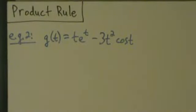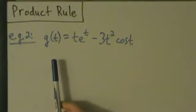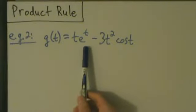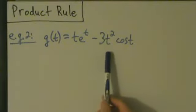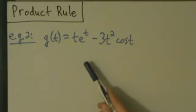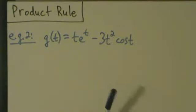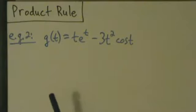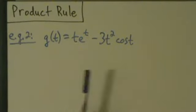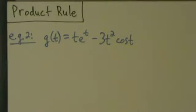Here's example two with a product rule. We have g of t equals t times e to the t minus 3t squared times cosine of t. It looks like kind of a mess, but remember, the sum and difference rules tell us that we can just differentiate term by term. So we can just focus on one term at a time, and that'll help simplify things.